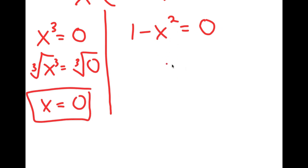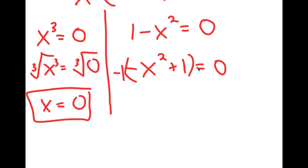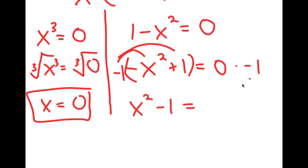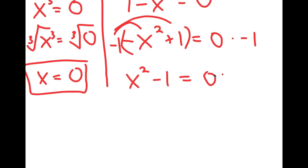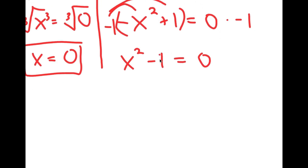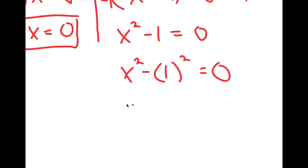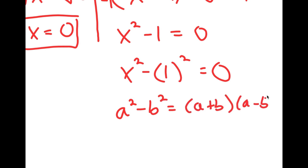For 1 minus x squared equals 0, I'm going to rewrite this as negative x squared plus 1 is equal to 0. Now I'm going to multiply both sides by negative 1. Negative 1 times negative x squared plus 1 is equal to x squared minus 1, and 0 times negative 1 is 0. So I get x squared minus 1 equals 0. And 1 is the same thing as 1 squared, so I have x squared minus 1 squared is equal to 0. If I have something in the form a squared minus b squared, this is equal to a plus b times a minus b.